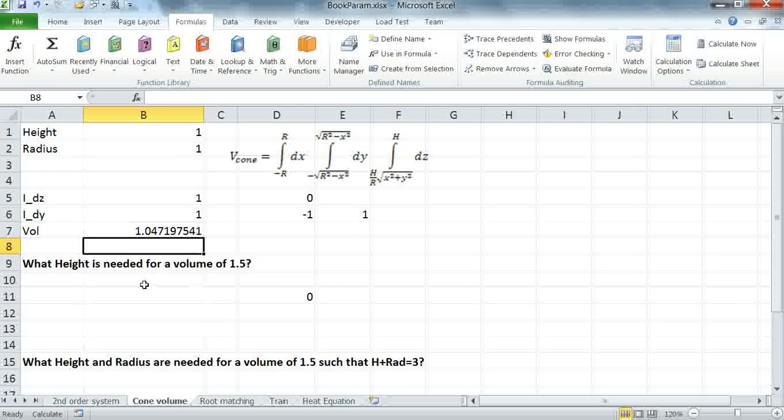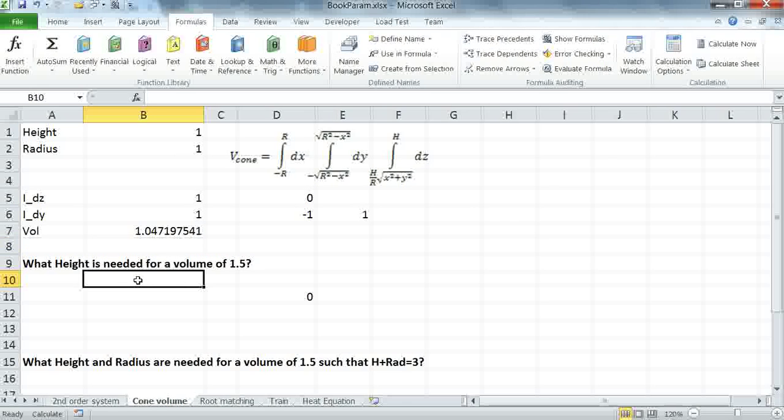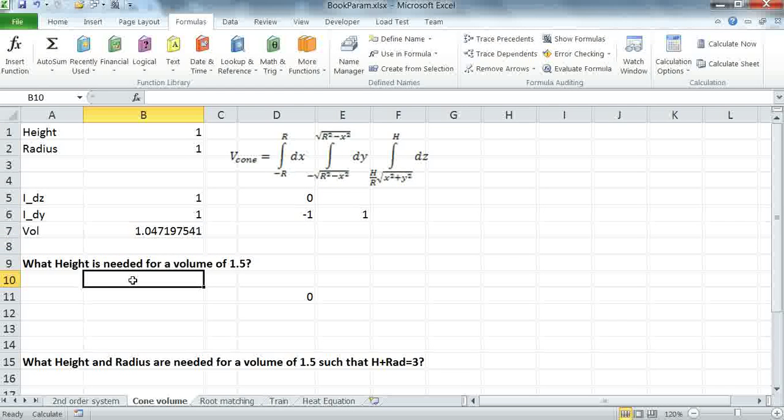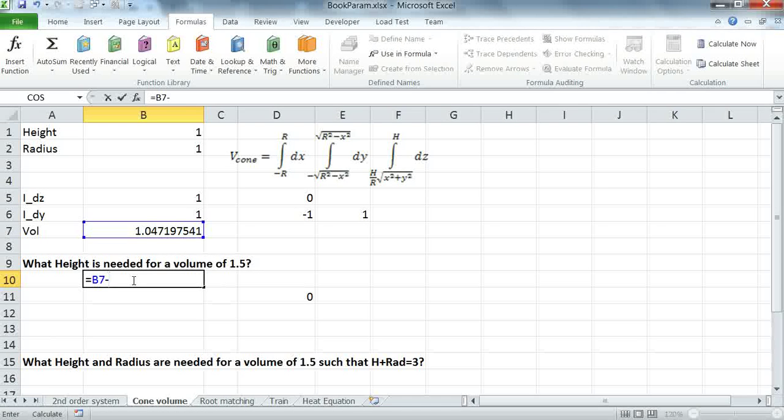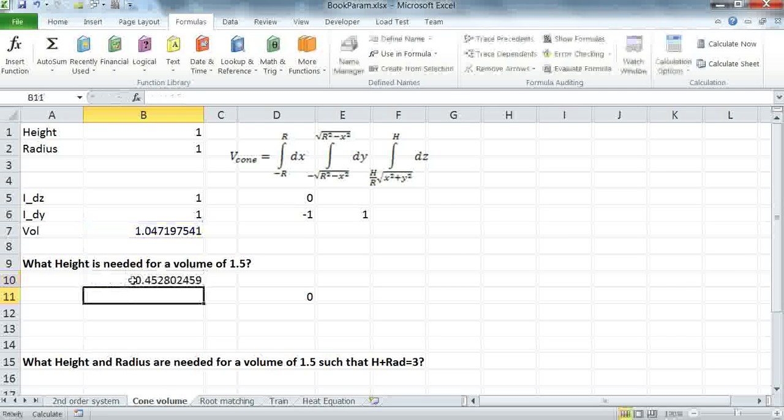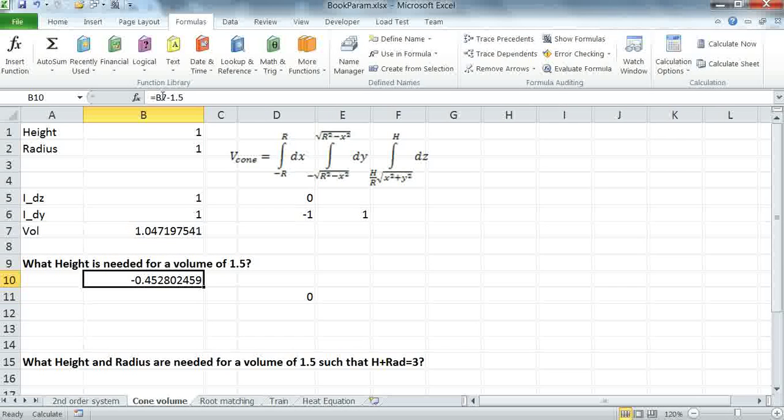It's a straightforward process. The first step is to define a constraint. And my constraint is the value I obtained with my initial guesses, which is in B7, minus my target value, which is 1.5. My objective is to drive this constraint to 0.